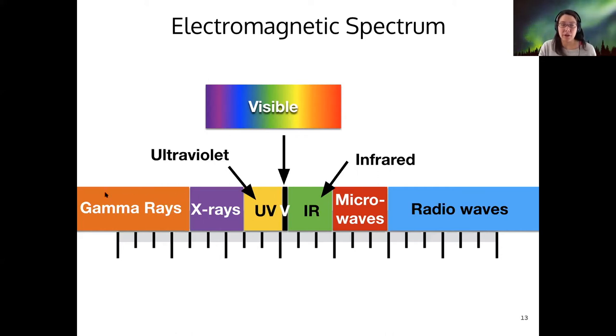So we have short wavelengths, high frequencies, high energy at the gamma ray side, and then long wavelengths, low frequency, low energy on the radio side. And the visible part of the spectrum that we can see is just a tiny slice.